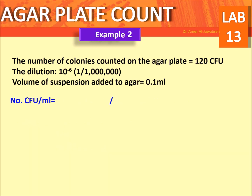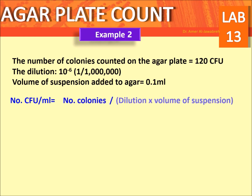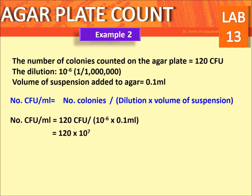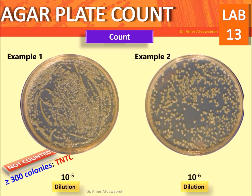Second example: volume of suspension added to the agar is 0.1 ml. The number of colonies counted on the agar plate equals 120 CFU. The dilution is 10 to the power minus 6. The dilution 10 to the power minus 5 is not counted.